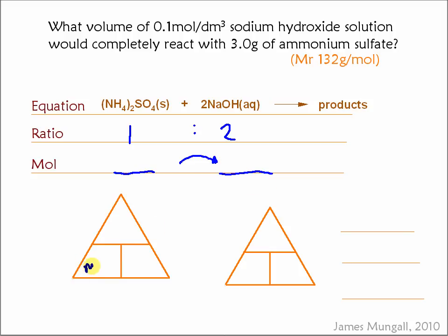So that means that we need to get the mole of the ammonium sulfate. We can do that by taking the mass and dividing by the MR, which is 0.0227 mole, multiplied by 2 to give the mole of sodium hydroxide that would react with, and that's 0.0455.